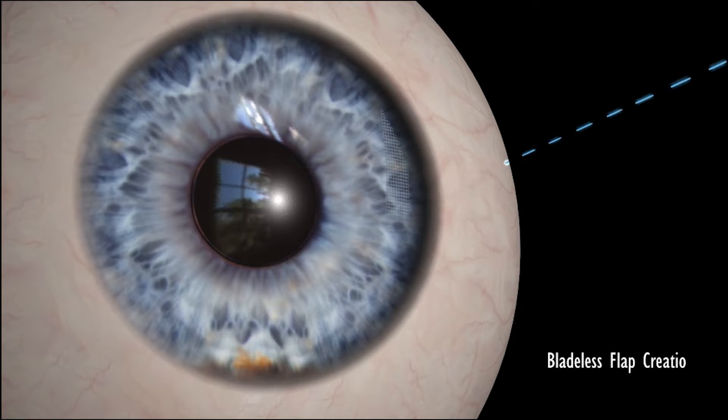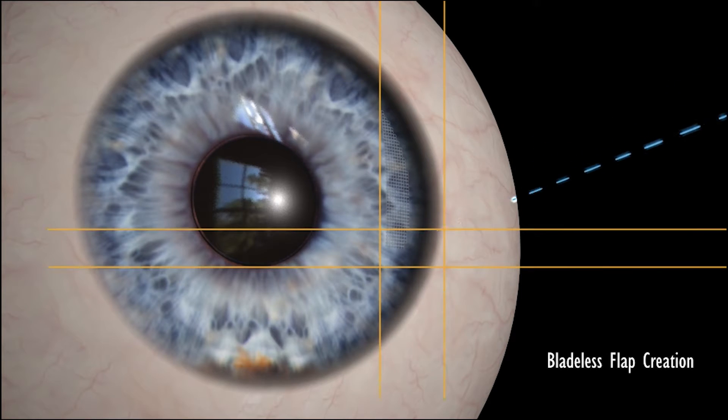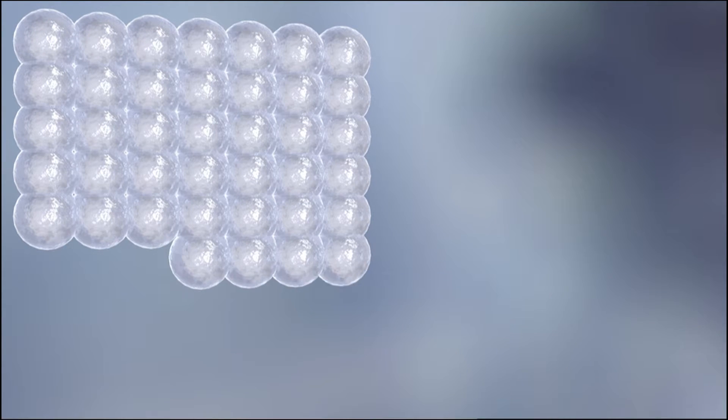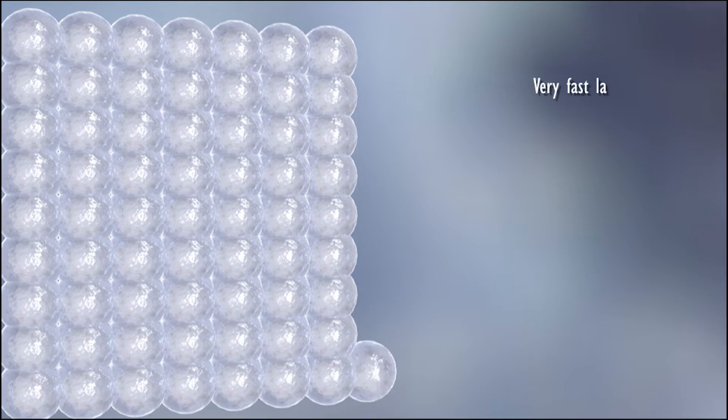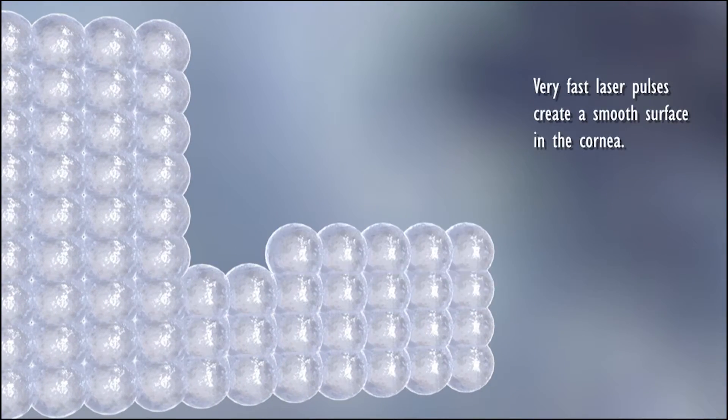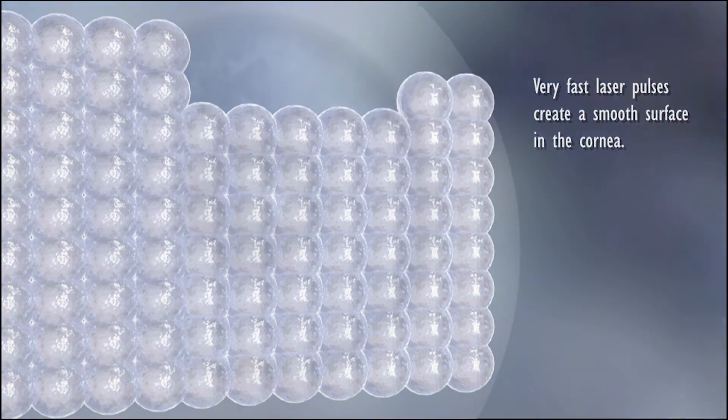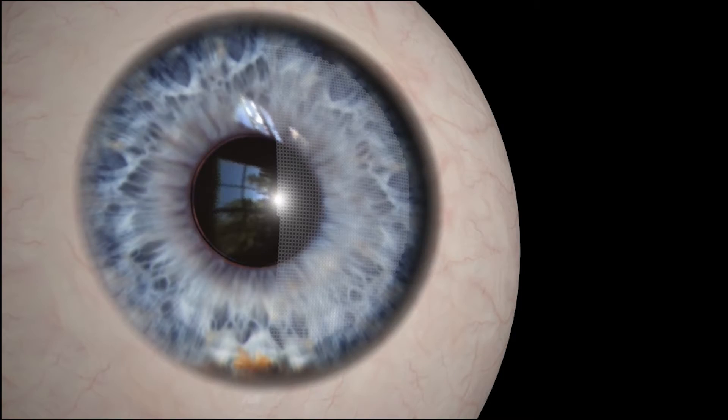Z LASIK is a two-step, bladeless procedure. With a femtolaser, your surgeon creates a thin flap on your cornea. With its extremely high frequency of pulses, the femtolaser separates the layers of the cornea in only a few seconds, creating an ultra-thin flap.